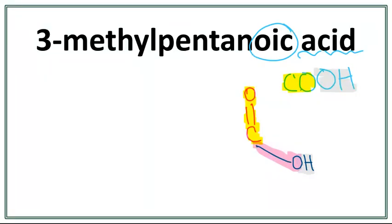Okay, so now we have the COOH drawn in. Let's work on the parent chain. This 'pent' right here tells us that there are five carbons in the longest carbon chain. This 'ane' here tells us that there are only single bonds between carbons and this is an alkane.